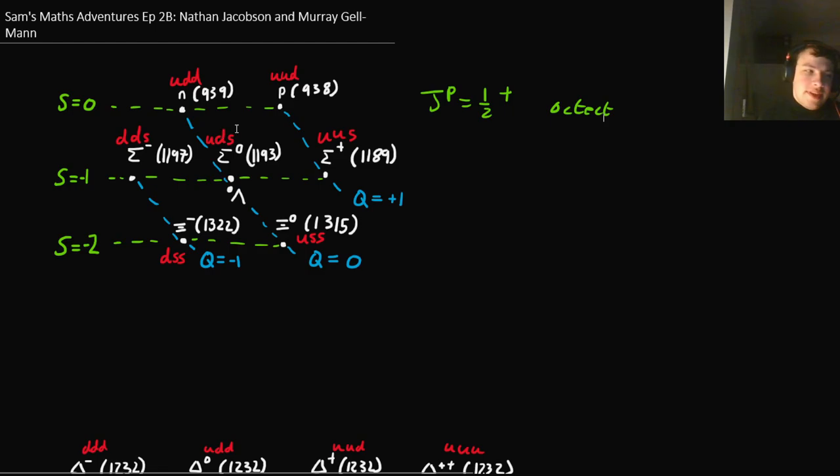Basically, Gell-Mann noticed that things fit nicely if we had this degree of freedom called strangeness. Where normal matter, so protons and neutrons, pions as well if we're looking at mesons, are not at all strange. They're normal, ordinary matter that we knew about before we started smacking things together in particle colliders and looking at cosmic rays.